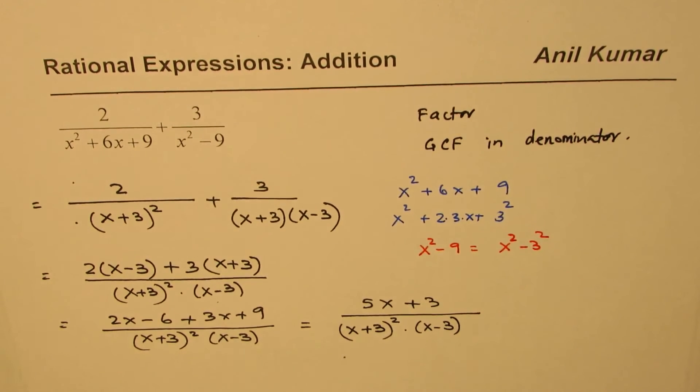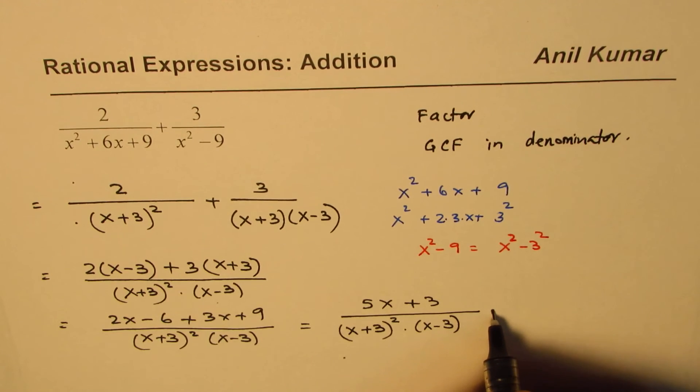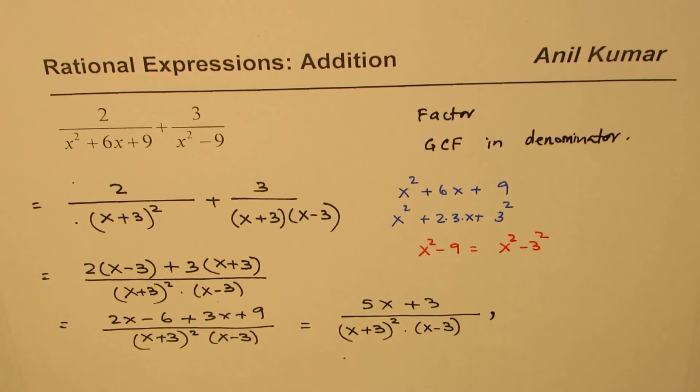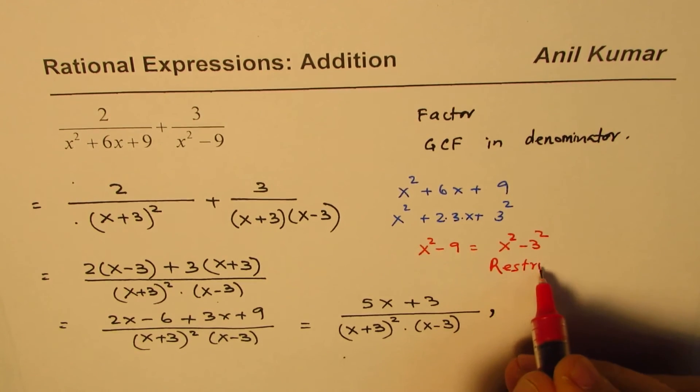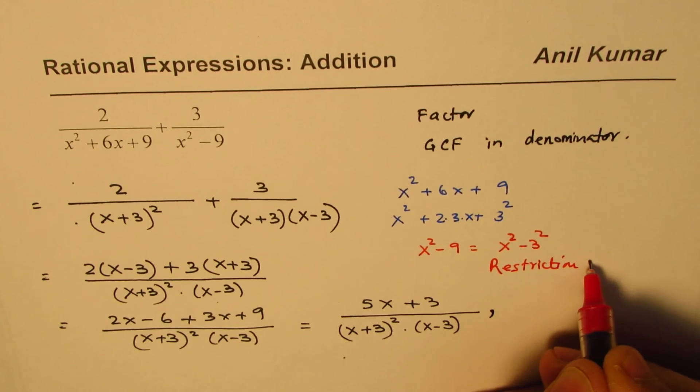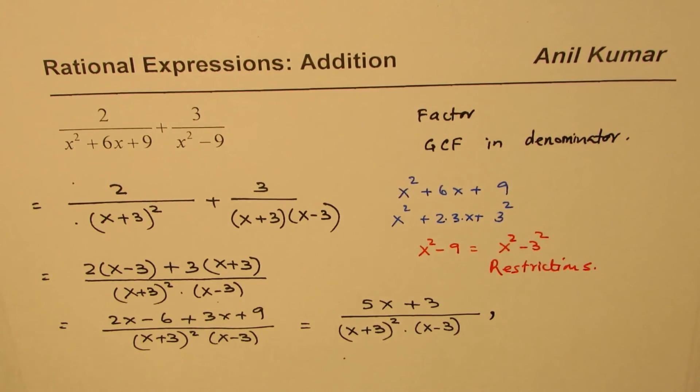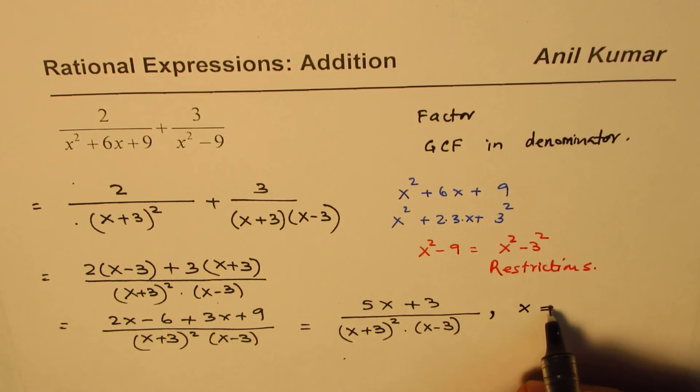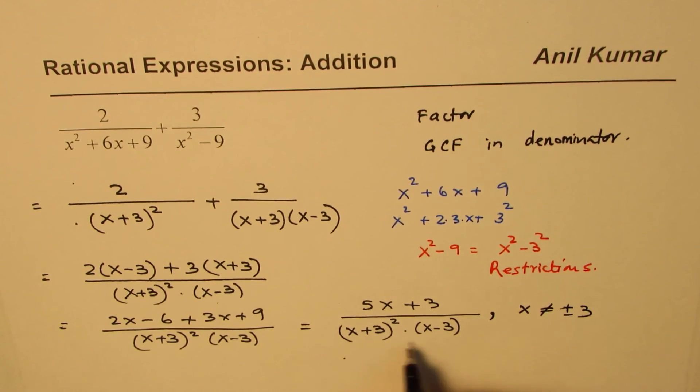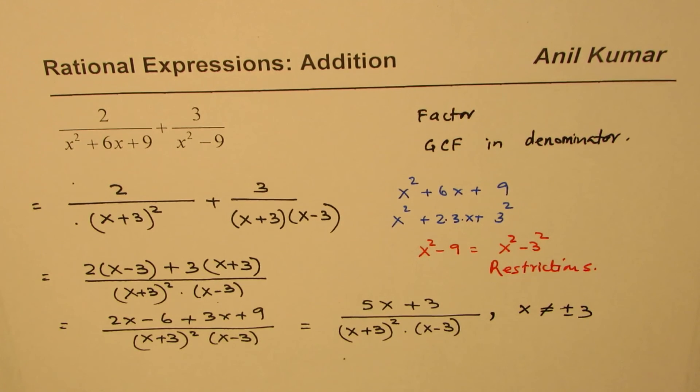Now, that is our final answer but before writing that as an answer, you have to include restrictions. Let me remind you, you have to include restrictions. Restrictions for our example is that denominator cannot be 0. So, x is not equal to plus or minus 3 because those numbers will make denominator as 0.